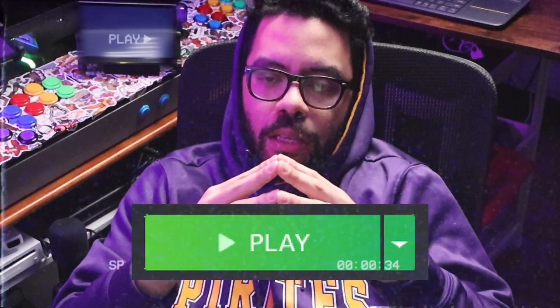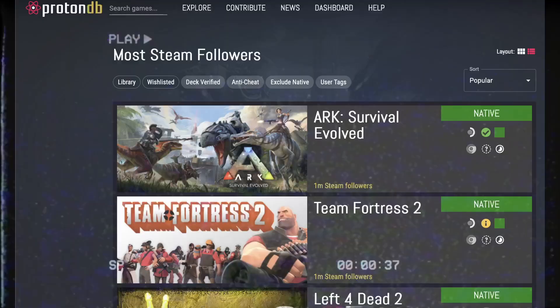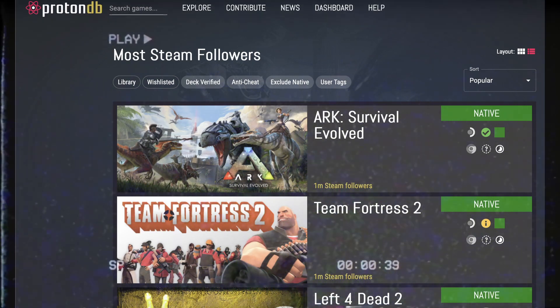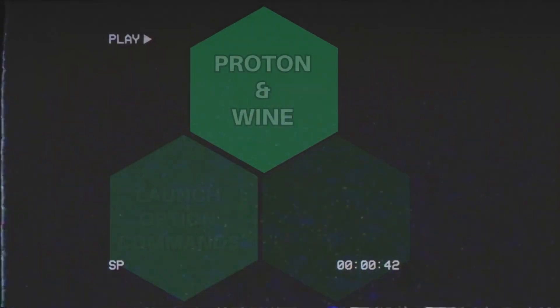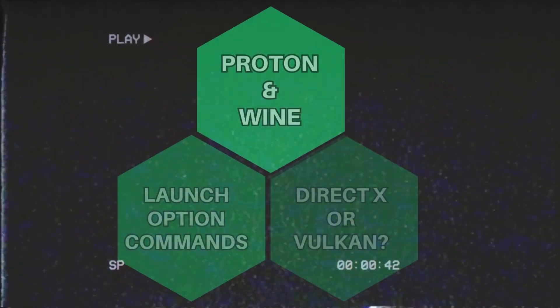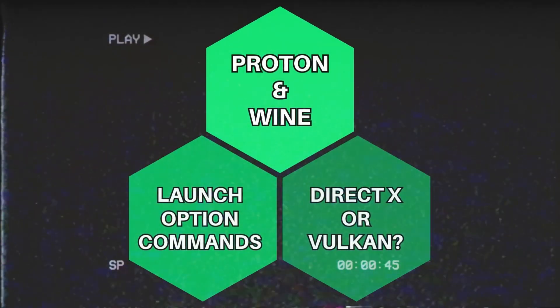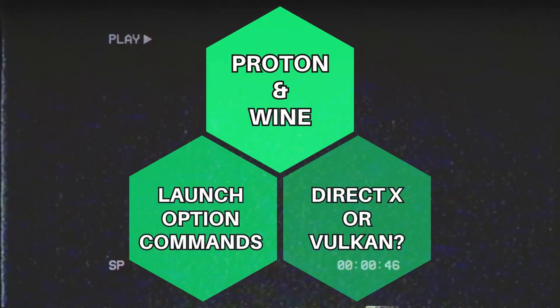Next is the most important step: click play. If you want to do some research before clicking play, visit ProtonDB and it will tell you how well that game runs on Linux. Some users may recommend a specific version of Proton — the application that translates Windows games into Linux — to run for that particular game, along with some launch option command recommendations.